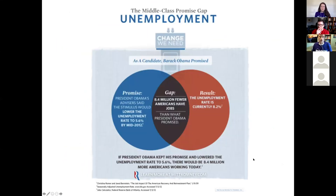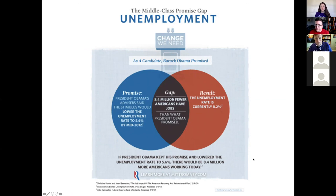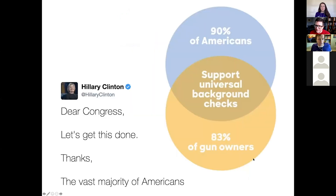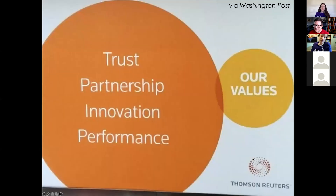There are so many offenses of Venn diagrams online. One from the Romney campaign had: Obama's advisors said stimulus would lower unemployment to 5.6% by mid-2012, and the result was unemployment at 8.2%. There's some gap shown but it has nothing to do with a real Venn diagram intersection. And it isn't just on the right — this is on the left too. A Hillary Clinton campaign Venn diagram showed 90% of Americans and 83% of gun owners support universal background checks. Students love the stories we make about these, and it makes them more critical of what they're seeing.